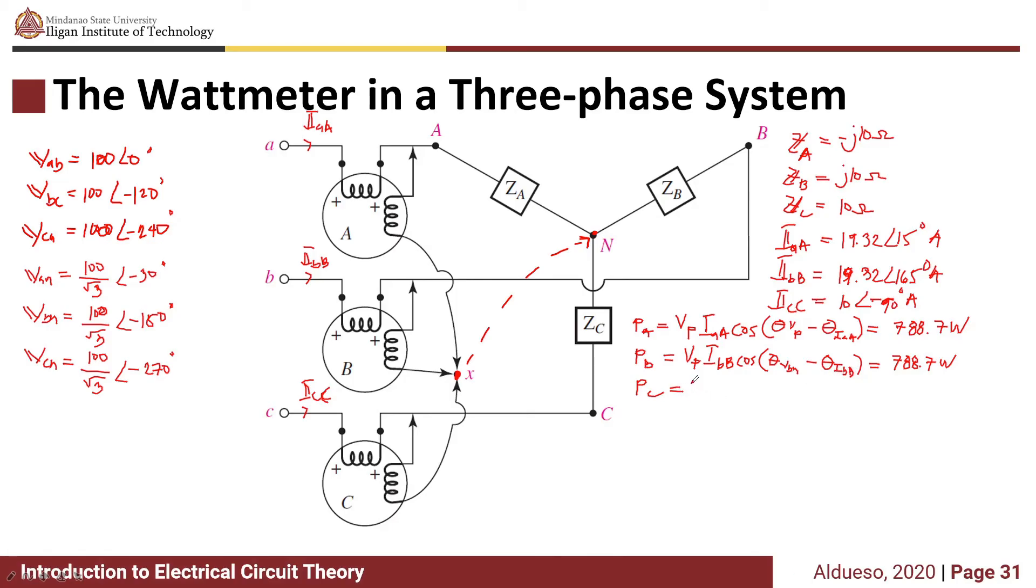Lastly, we have VP times ICC times cosine of the angle of VCN minus the angle of ICC, which equals -577.4 watts.